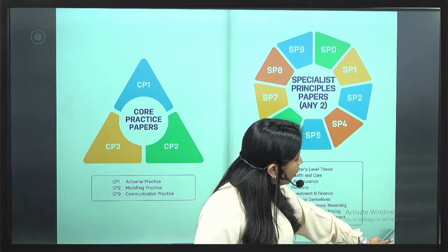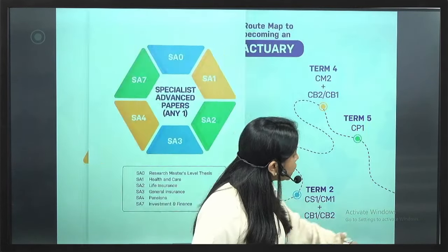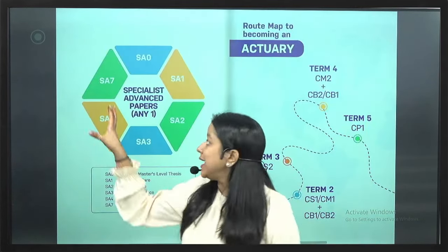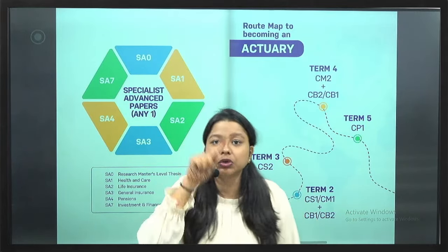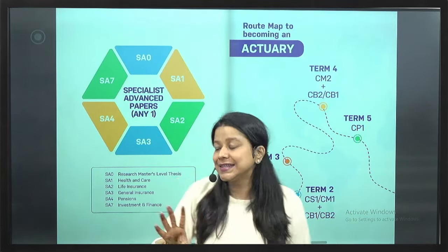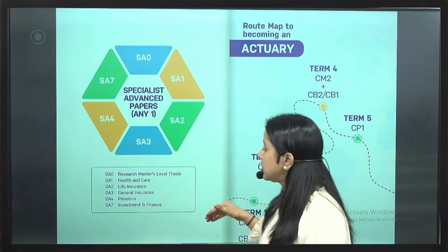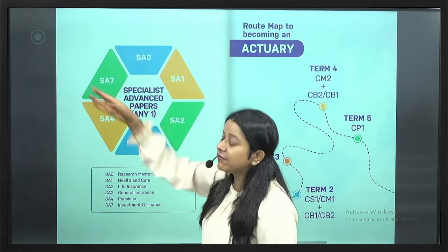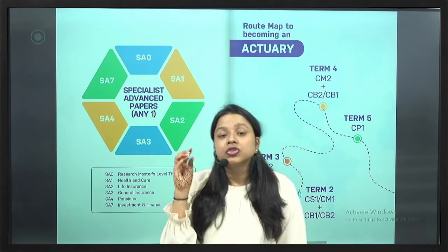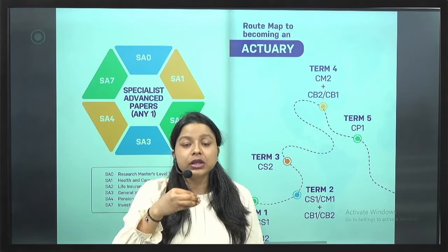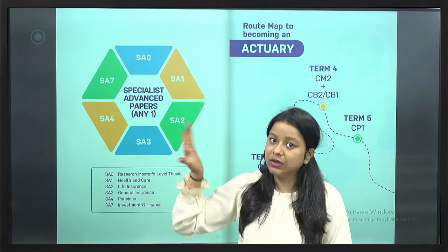After the specialist papers, you appear for one SA level paper. You choose based on where you are working or which field interests you — for example, SA3 for general insurance or SA7 for investment. So in total you have 13 papers to complete.